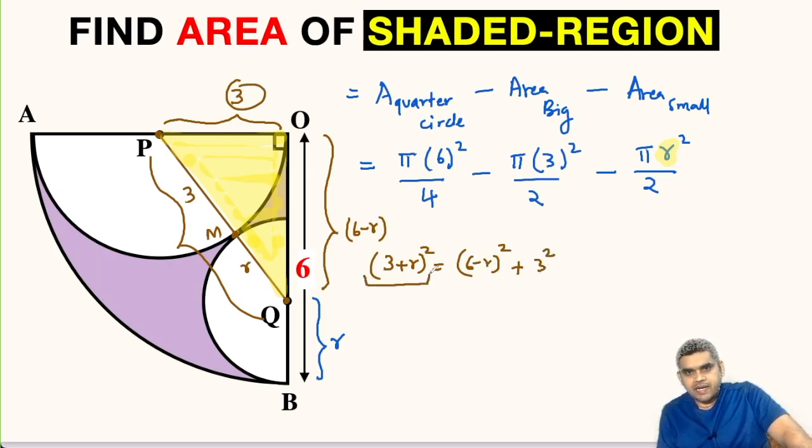Now let us expand this bracket using identity (a+b)². So we will get 3² plus r², that is 9 + r² + 6r equals. Here we will expand using identity (a-b)². So this will be 36 + r² - 12r, then 3² will be 9.